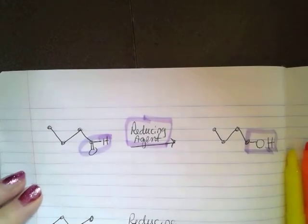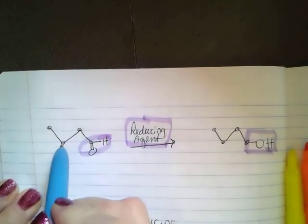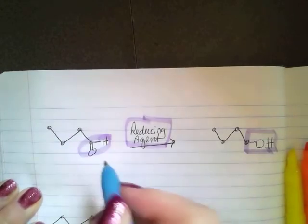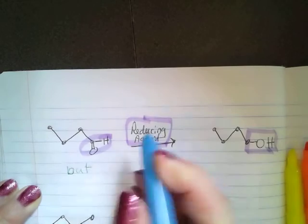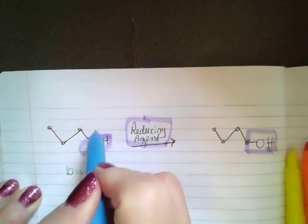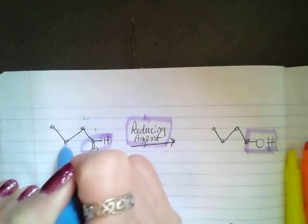Now, let's put some words with this. This has one, two, three, four carbons, so it's going to have the B-U-T parent name. Remember this has to be carbon one, two, three, four.